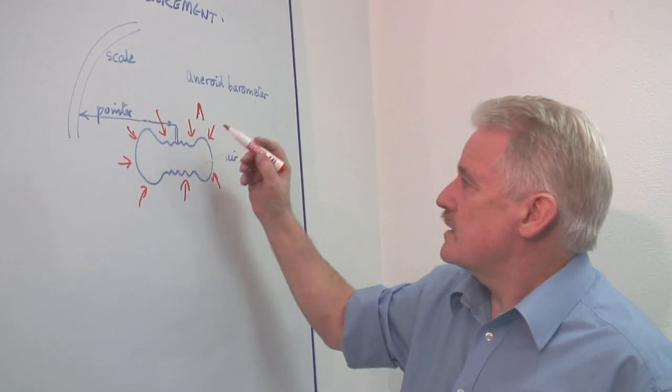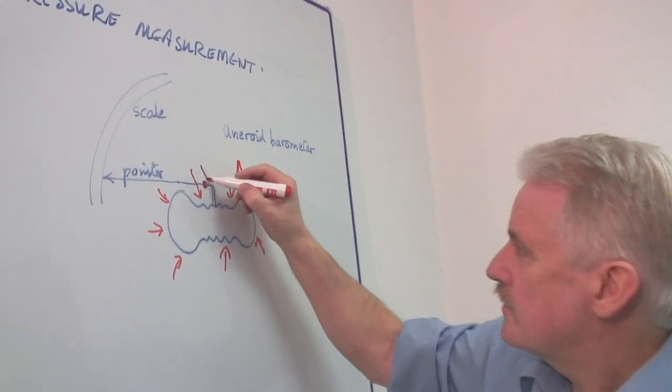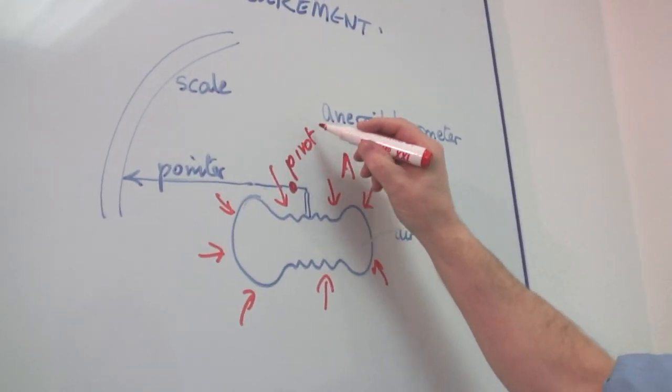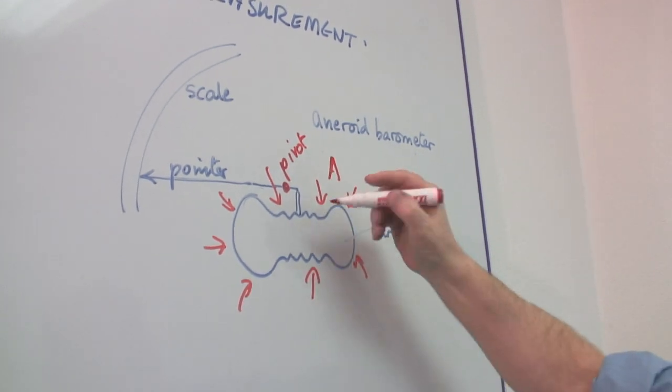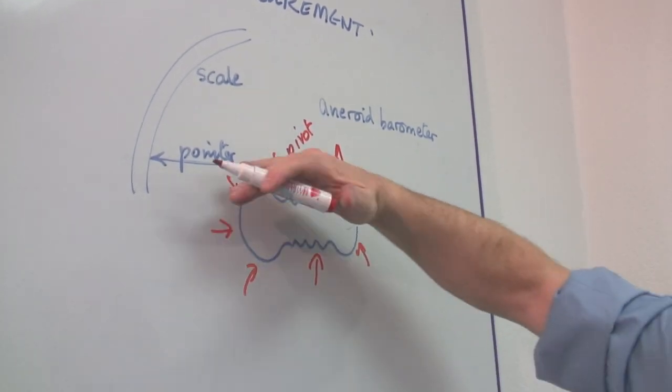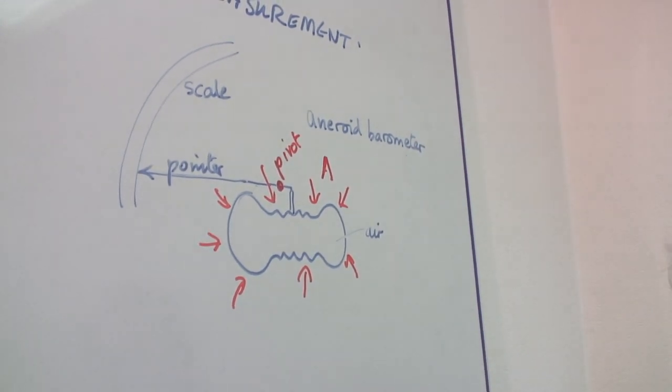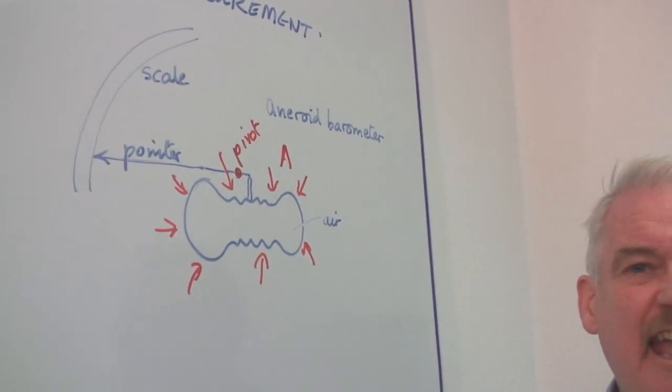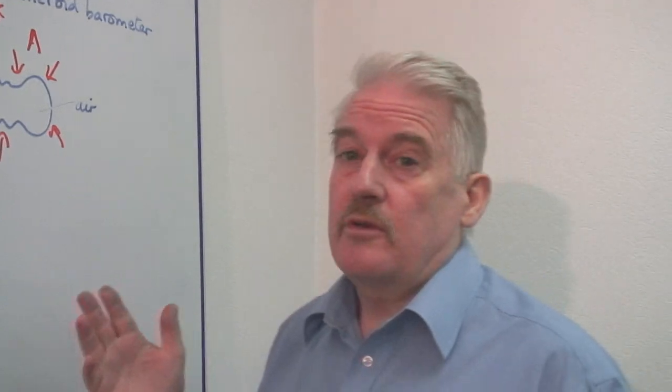There is a pointer here and that is a pivot. And as this is crushed, this point goes in and the pointer moves around the scale. Obviously, to get an accurate reading is not so easy.